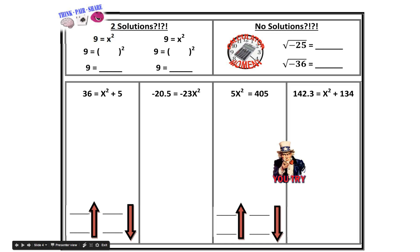Try it out yourself and we'll discuss why there are two solutions. For example, if you had 3 squared and negative 3 squared, prove that you get true statements. Also, as a reminder, if you have to take the square root of a negative value, there's no solution. Try plugging square root of negative 25 and square root of negative 36 into your calculator and write out your answer.